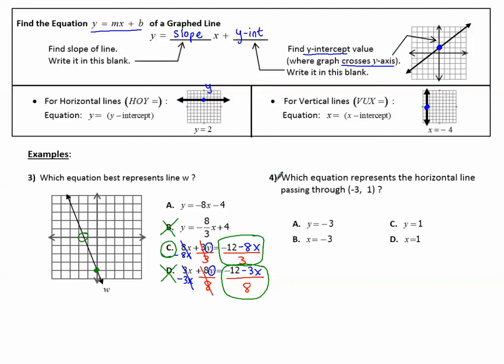Number 4. Which equation represents the horizontal line passing through negative 3, 1? Remember, horizontal, HOY, therefore I should have Y equals. So anything with X equals is not going to be a choice. Also, I know that X, Y, so this is the number I want, therefore, Y equals 1 is the correct equation.